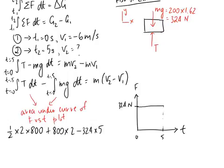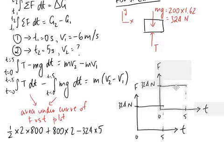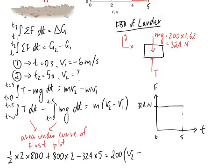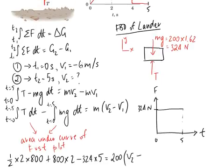So now we just need to substitute what's going on in the other side. So it's going to be equal to the mass of our lander, which we said was 200 kilograms, multiplied by the final velocity, which is what we're looking for, V2, minus that initial velocity that we said was negative 6.